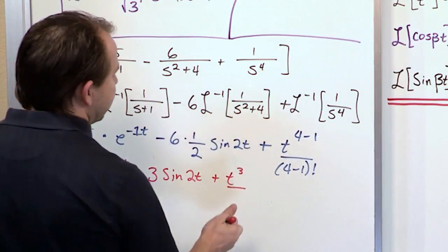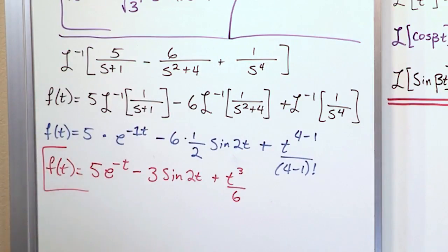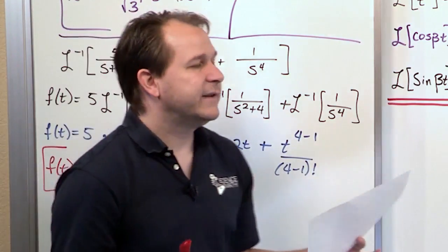And then you have 4 minus 1 is 3. 3 factorial is going to give you 3 times 2 is 6. So the final answer is 5e to the minus t minus 3 times sine 2t plus t cubed over 6. And that's basically the final answer.